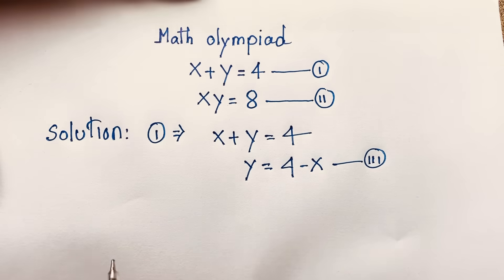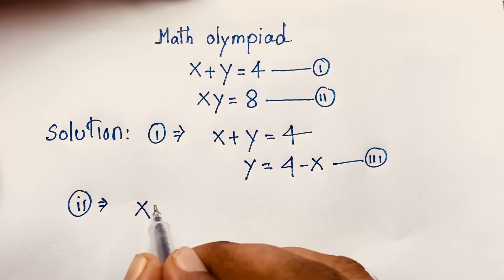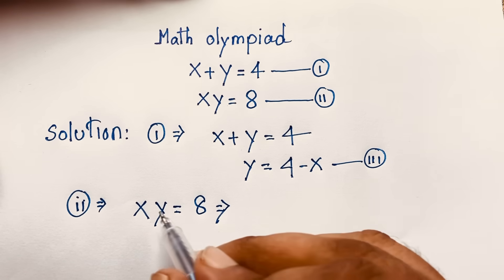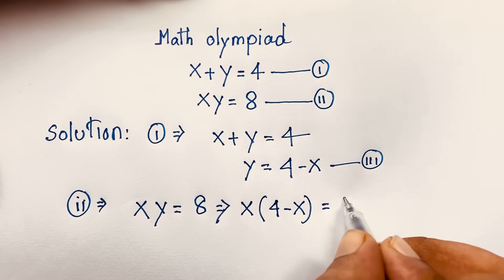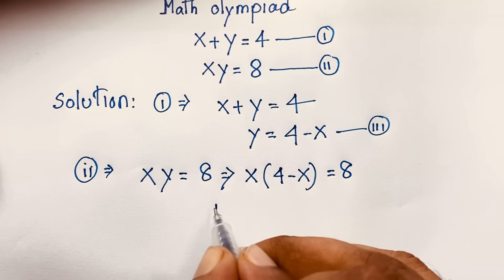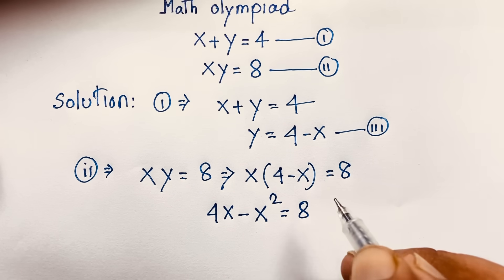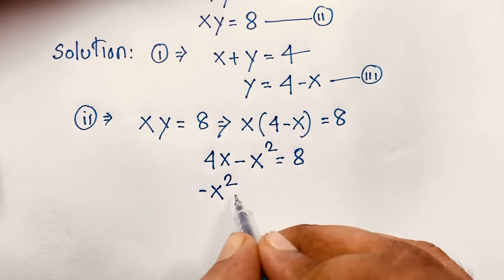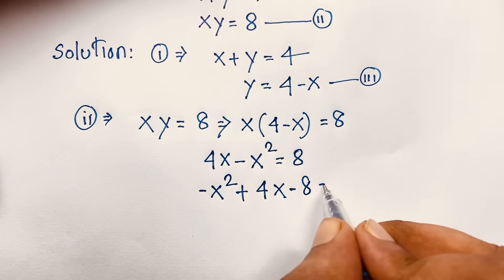Now, our second equation is xy is equal to 8. Remember that y is equal to 4 minus x, so I substitute this value here. It will be x times (4 minus x) is equal to 8. Expanding: 4x minus x squared is equal to 8. Then, rearranging: minus x squared plus 4x, and moving the 8 to the other side gives minus x squared plus 4x minus 8 is equal to 0.